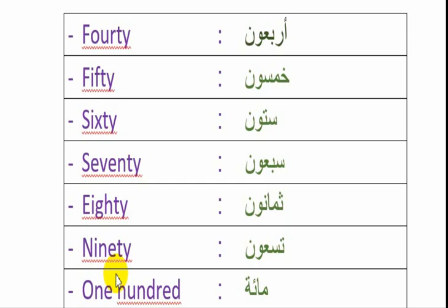الملاحظة الأخيرة هي أن الإنجليزيين أو الأمريكيين - الناس الذين ينطقون بالإنجليزية - بالنسبة للعدد عشرون الذي نكتبه 20، هم ينطقونه بطريقة خاصة. إذن نقول: 21، 22، 23، 24، 25، 26، 27، 28، 29، 30.